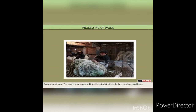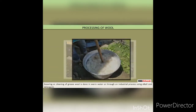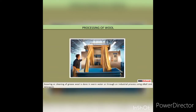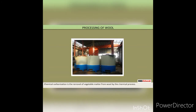Separation of Wool. The wool is then separated into fleece, bulk, pieces, bellies, crutchings and locks. Scouring or cleaning of wool is done in warm water or through an industrial process using alkali and a detergent. Chemical carbonization is the removal of vegetable matter from wool by a chemical process.